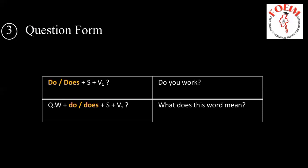Another form is: question word plus 'do' or 'does' plus subject plus base form of the verb. Question words include: what, who, when, how.